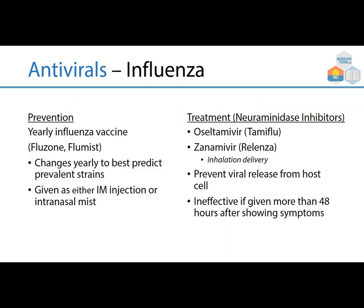With influenza, prevention is through vaccines like Fluzone or FluMist — which changes yearly to best predict prevalent strains — given as an IM injection or intranasal mist. Once someone has influenza, treatment is with neuraminidase inhibitors like oseltamivir (brand Tamiflu) or zanamivir (Relenza), which is an inhalation delivery sometimes difficult for patients to use. Both prevent viral release from the host cell, but unfortunately they're ineffective if given more than 48 hours after symptoms appear.